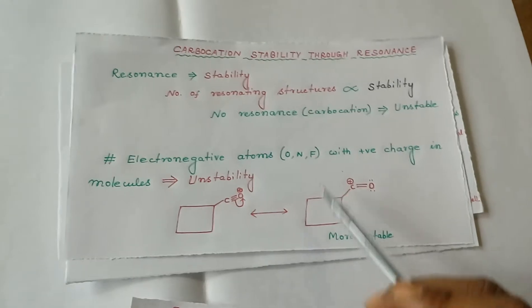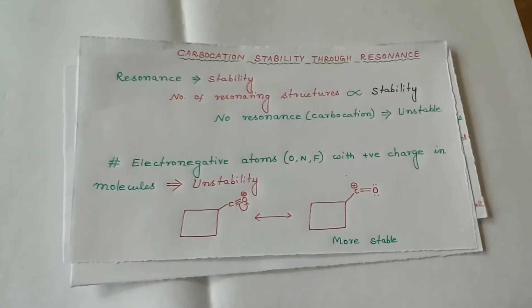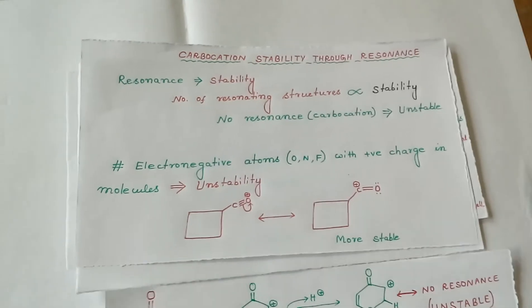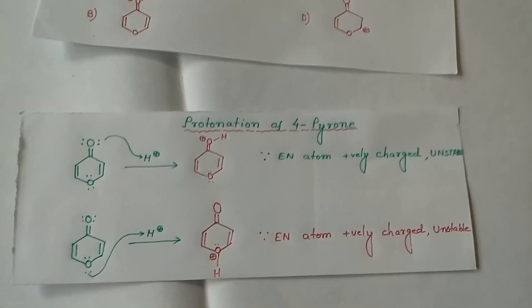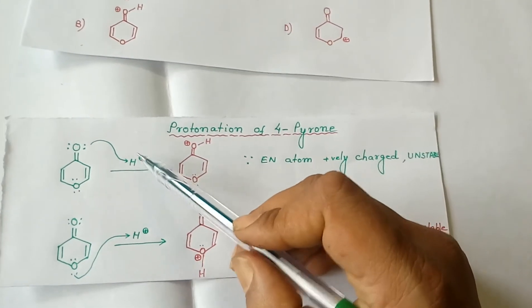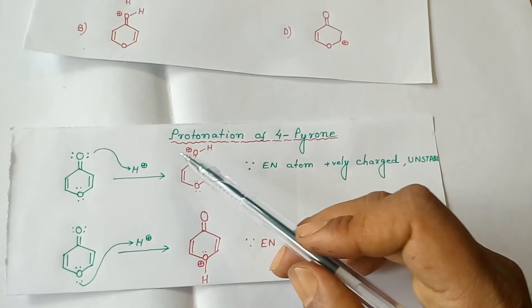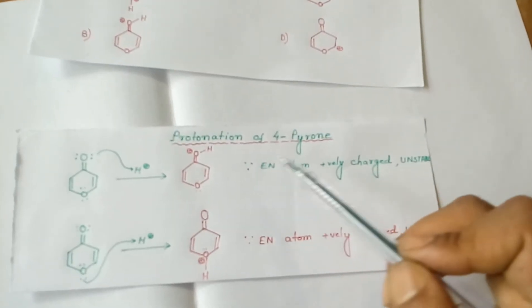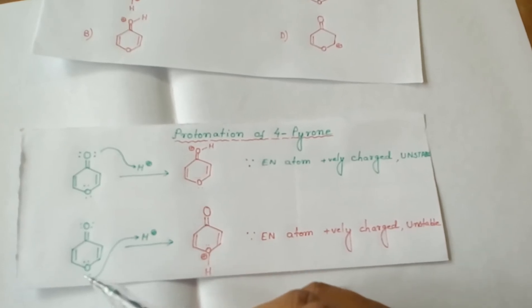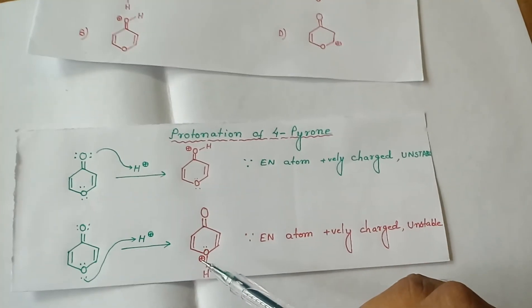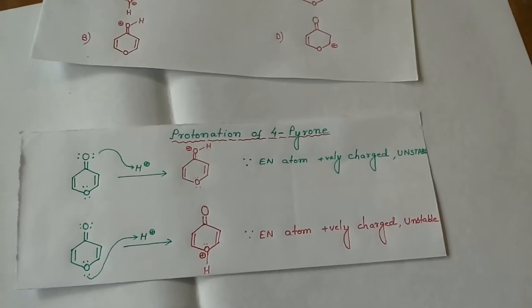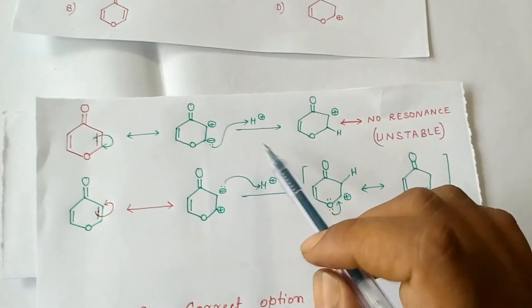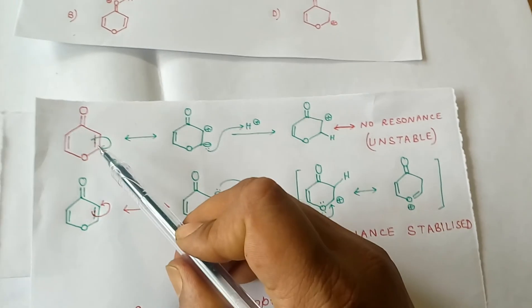Protonation of pyrone: pyrone can attack H+ through the oxygen lone pair, giving us this intermediate. Here, oxygen is positively charged, so it is unstable. Protonation may take place at the ether oxygen, making oxygen positively charged. Since an electronegative atom is positively charged, this species is also unstable.